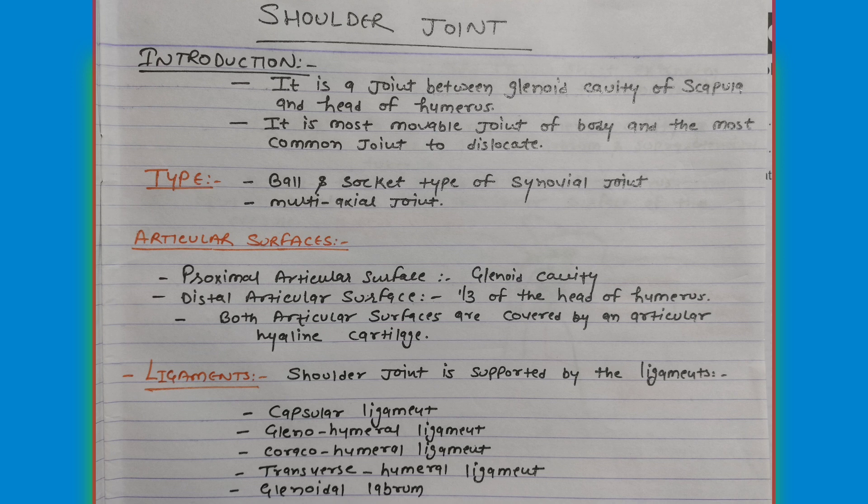The next heading is the articular surface. It has two articular surfaces. The proximal articular surface is formed by the glenoid cavity, whereas the distal articular surface is formed by one-third of the head of the humerus. Both articular surfaces are covered by hyaline cartilage.